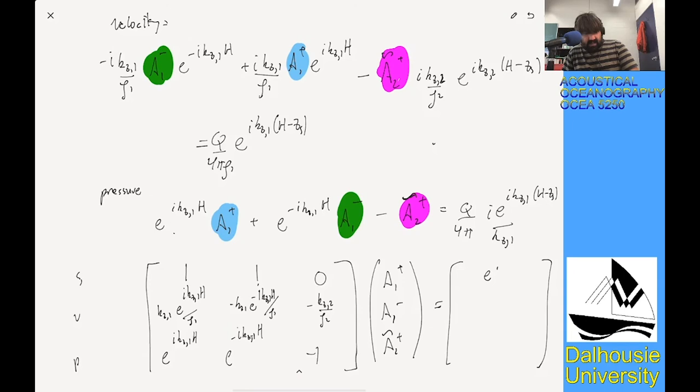And then on the right-hand side, we're going to have E to the I KZ1 ZS. For our velocity row, I'm going to put the rho one there, and then we have the E to the I KZ1 H minus ZS. And for our pressure row Z1 H minus ZS, and you're going to say to me, oh, but you forgot a bunch of terms. I'm going to write these terms just, I'm going to write them over here since I really don't have room. 4 pi KZ1 over QI. So you could write those on either side, but I'm going to write them over there.